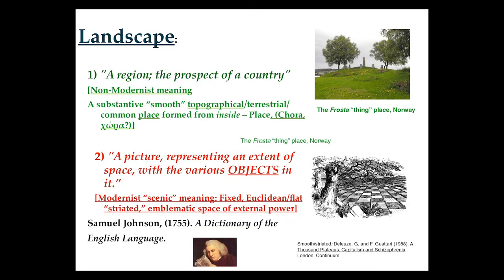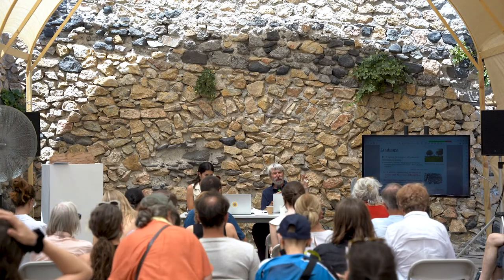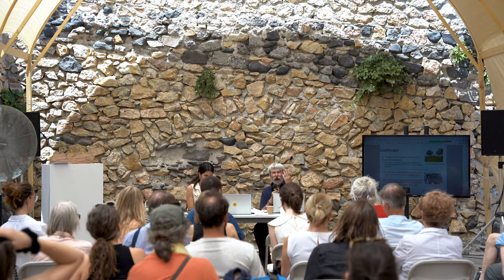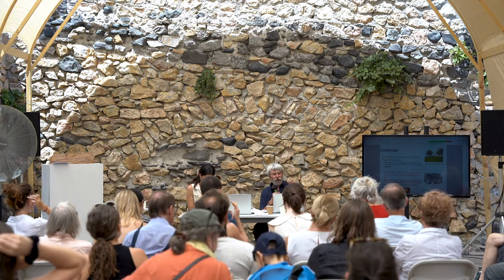I said landscape was a substantive, smooth topographical, terrestrial commonplace formed from the inside. I believe this meaning of landscape was very close to the Greek concept of Kora. And then the modernist meaning Johnson gives is: 'a picture representing an extent of space with the various objects in it.' So it's an abstract Euclidean space within which things are placed — on one hand you're talking about shapes people relate to, on the other an abstract space within which things are located.